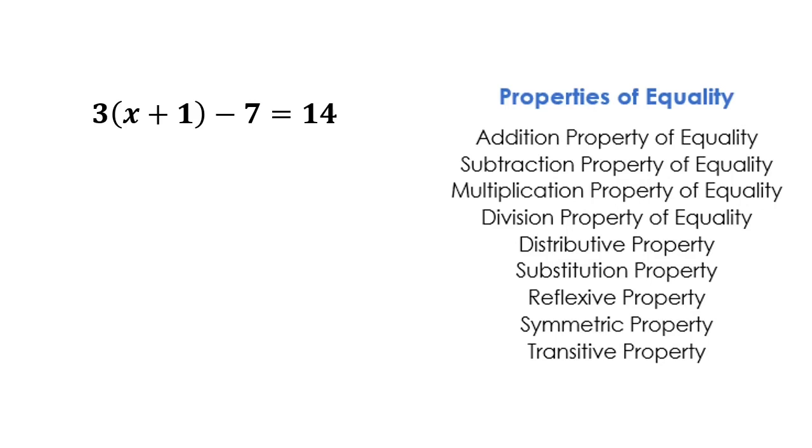So in the first step to solve this problem, we can do a couple of different things. We can either distribute out the 3 to that x plus 1, or we can move that 7 over to the other side. We're going to start with moving the 7 over to the other side. You know already that you can add 7 to both sides of this equation.